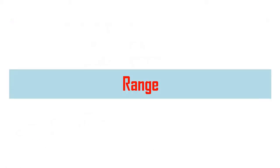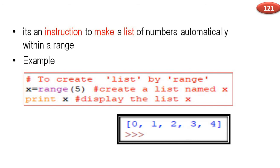range is an instruction to make a list of numbers automatically within a range. For example, x assigned range(5) will create a list named x with 5 elements: 0, 1, 2, 3, 4 — starting from 0 up to 4.